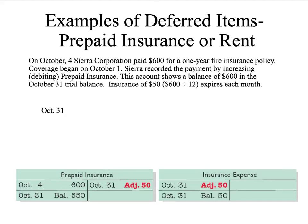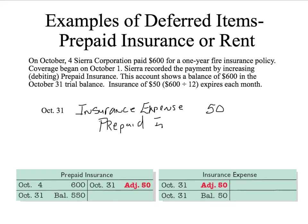We need an adjusting entry to reduce the prepaid insurance and to recognize the insurance expense. That entry would be: debit insurance expense — always debit an expense — and it's for one month, $50. So I recognize the expense, and credit prepaid insurance $50.